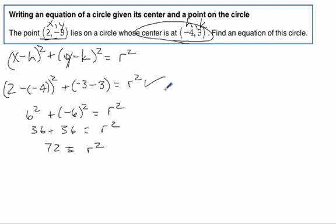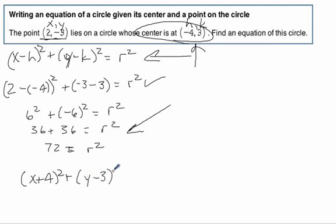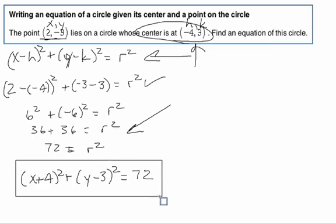Great, we've got the r squared. Now we just go back into our original equation, putting in the (h, k) and the r squared here. So our final answer is (x + 4)² + (y - 3)² = 72. That's the equation of the circle and we're all done. Here we go.